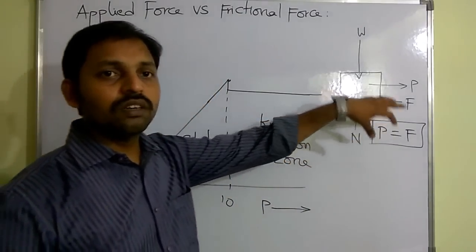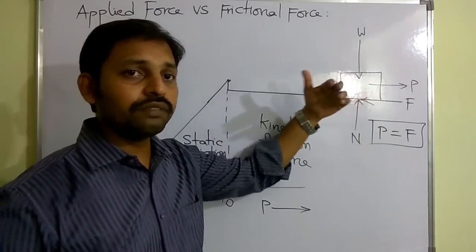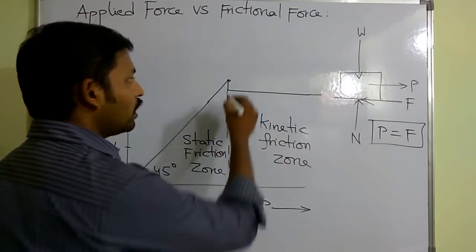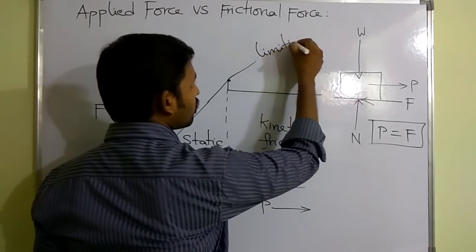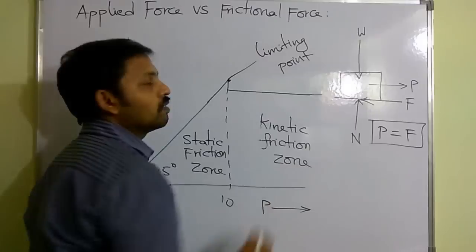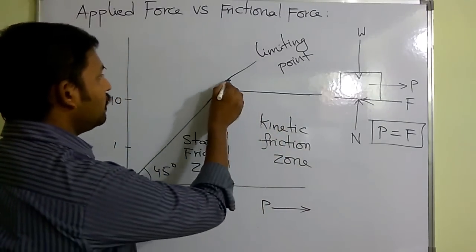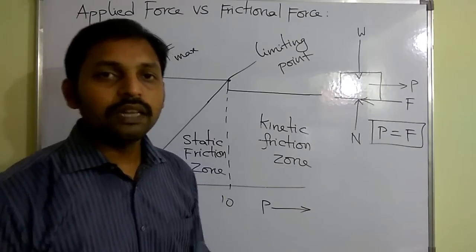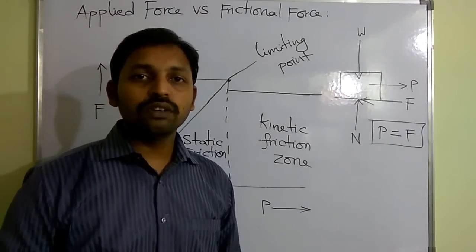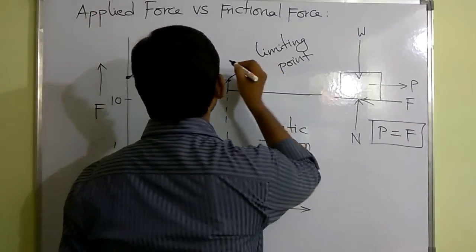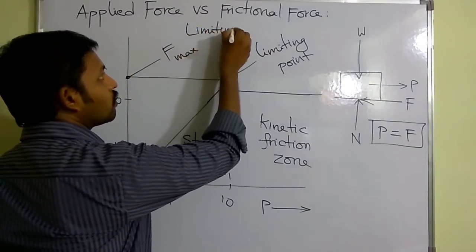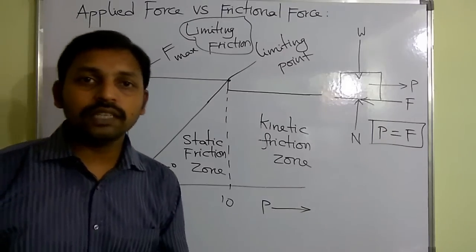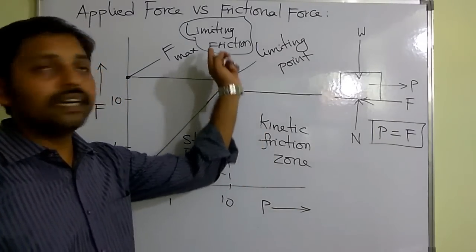When I increase the force gradually, there comes a stage where applying even one Newton more causes the body to move. That point is the limiting point, and at that point the friction will be maximum. This maximum amount of friction is called limiting friction — limiting friction is the maximum value of frictional force experienced by the body. In this graph we have seen the static friction zone, kinetic friction zone, limiting point, and limiting friction.